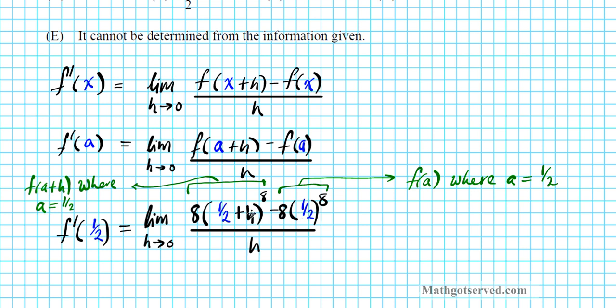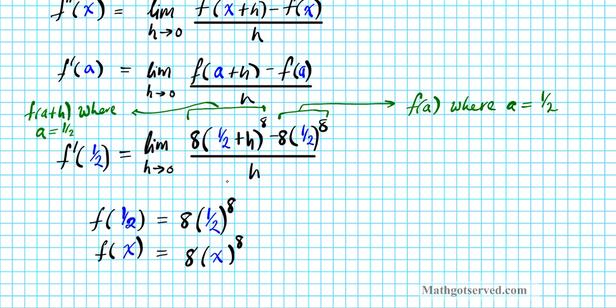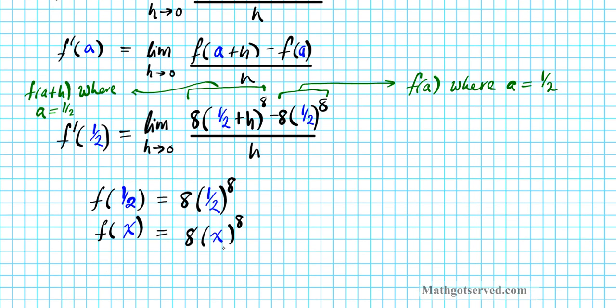So this is f of a, this is f of a plus h. So if f of a is, let's write this down, f of a, which is f of 1 half. If f of 1 half equals 8 times 1 half to the 8th power, now what is f of x going to be? What is f of x? f of x is simply going to be the same thing, but we're replacing 1 half with x. So it's going to be 8 times x to the 8th power. So this is the function that we're looking for the derivative of. So this expression right here is simply telling us to find the derivative of this function where x is equal to 1 half.